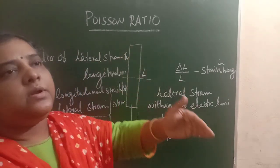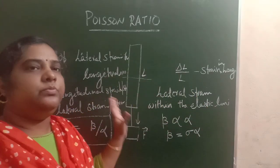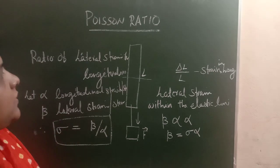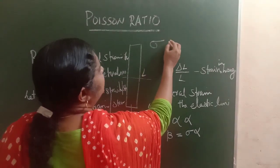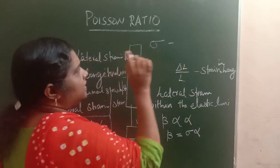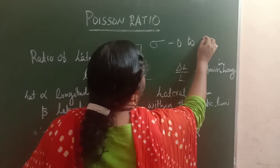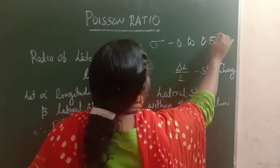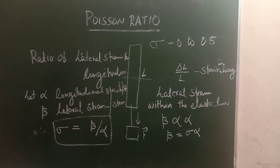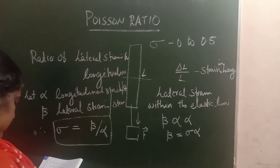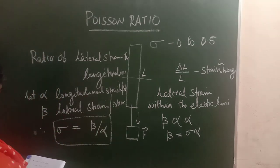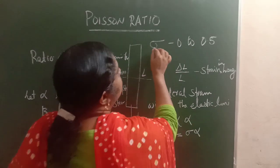The Poisson's ratio of a material varies. In general, it varies from 0 to 0.5.